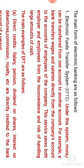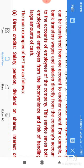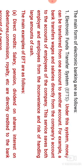Now let us see the first form of electronic banking, that is EFTS — Electronic Fund Transfer System. Under this system, money can be transferred from one account to another account. For example, a bank transfers wages and salaries directly from the company's account to the accounts of employees of the company.